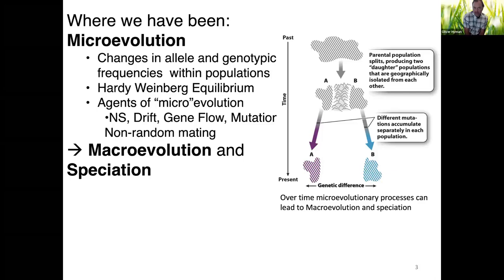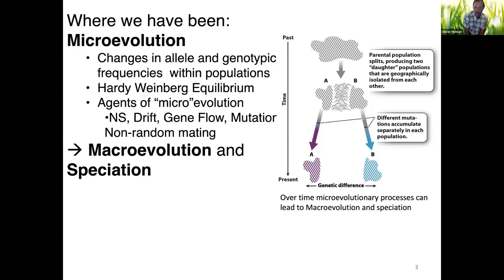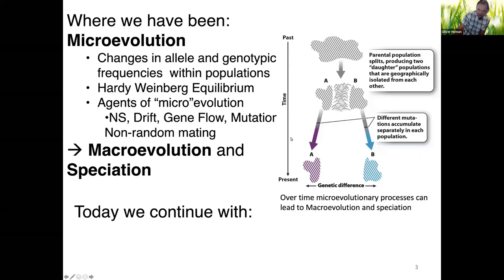We've talked about microevolution as changes in allele and genotypic frequencies in populations over time, causing a population to go out of Hardy-Weinberg equilibrium. This can be caused by natural selection, drift, gene flow, mutation, and non-random mating. These microevolutionary processes over many generations can lead to macroevolutionary processes — large-scale evolution over long periods of time — and ultimately speciation, where one population diverges into two different species.